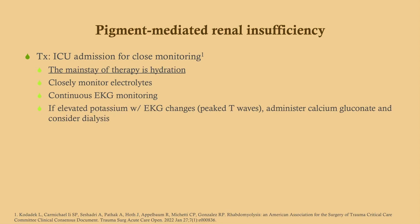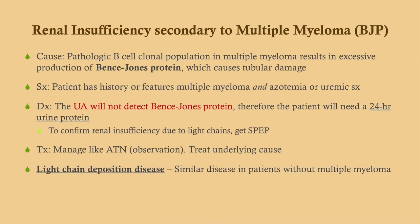Admit rhabdomyolysis patients for close monitoring. Aggressively hydrate to flush the kidneys. Monitor electrolytes every four to eight hours — sodium, potassium, magnesium. Continuous EKG monitoring is important because high potassium can cause dysrhythmias. If there is elevated potassium with EKG changes such as peaked T-waves, administer calcium gluconate and consider dialysis.